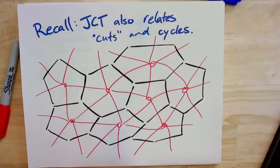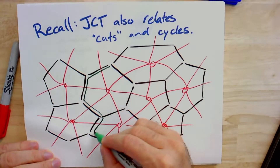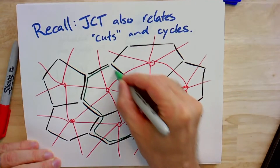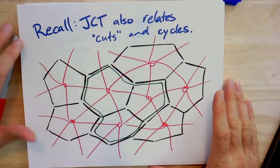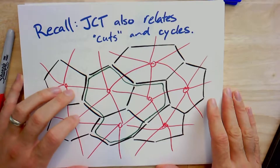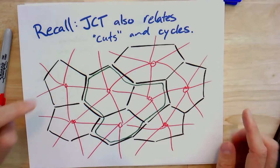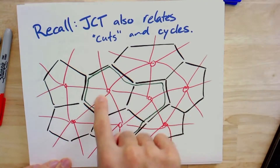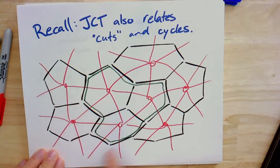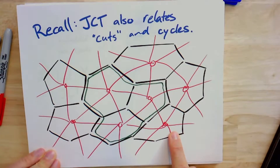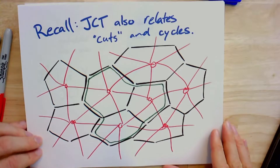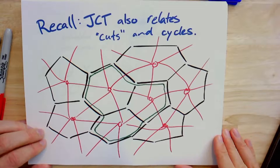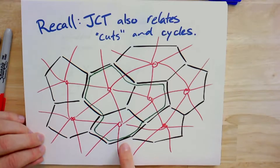In black I have the graph, and I've drawn the dual graph. From the Jordan curve theorem, if you take a simple cycle in the graph, the embedding of that cycle separates the plane into two pieces — an inside and an outside. The faces of the original planar graph will all be either inside or outside. Those faces correspond to vertices of the dual, so drawing a simple cycle necessarily contains some dual vertices inside and excludes others. Every edge going from an inside vertex to an outside vertex forms a cut between those faces.